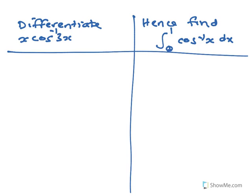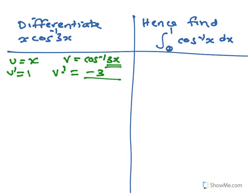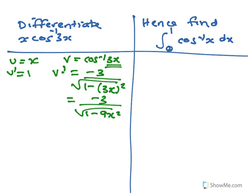Differentiating x·cos⁻¹(3x) — that's a uv product, so u equals x and v is cos⁻¹(3x). u' is 1, and v' is minus, because cos⁻¹(3x) differentiates to give a minus, and the chain rule gives a factor of 3, so it's minus 3 over the square root of 1 minus 9x².